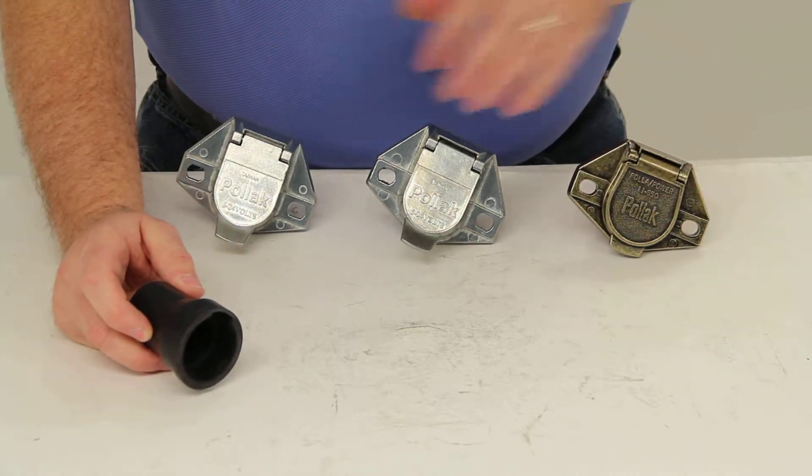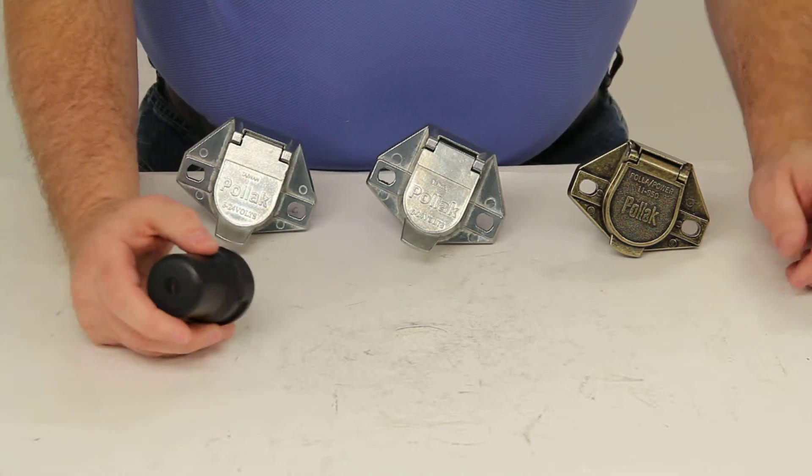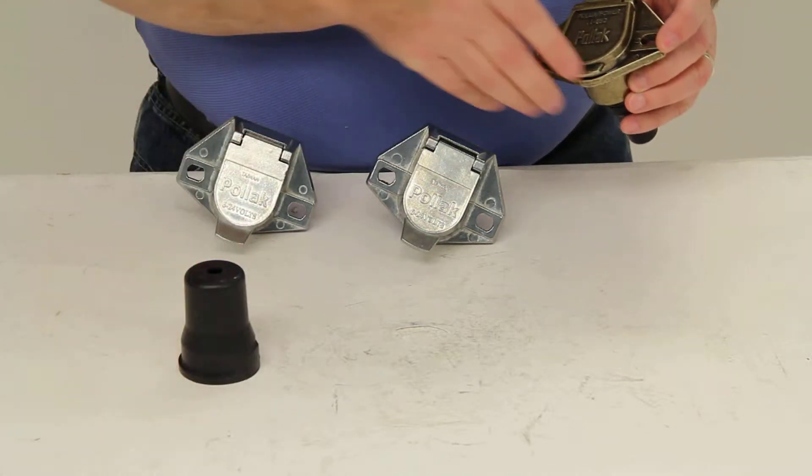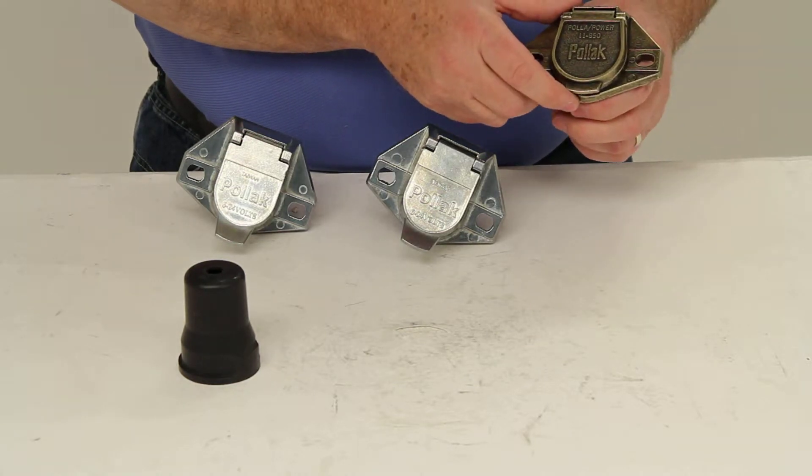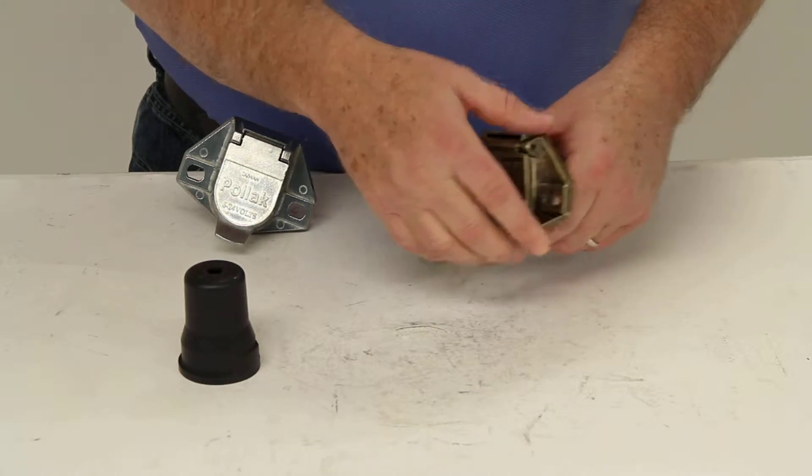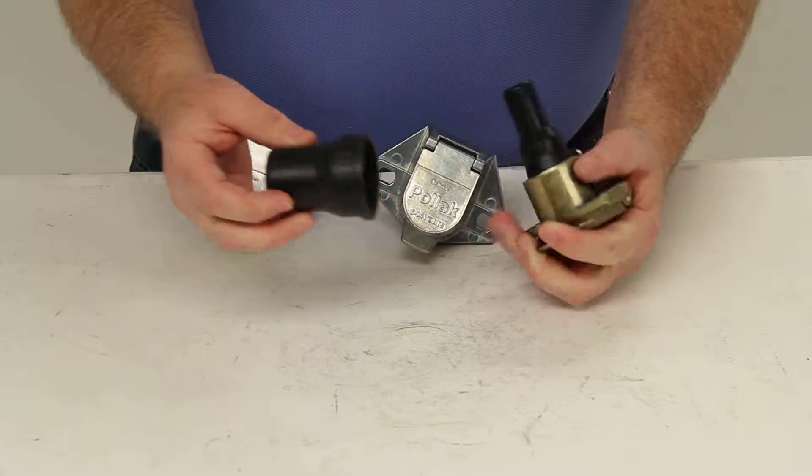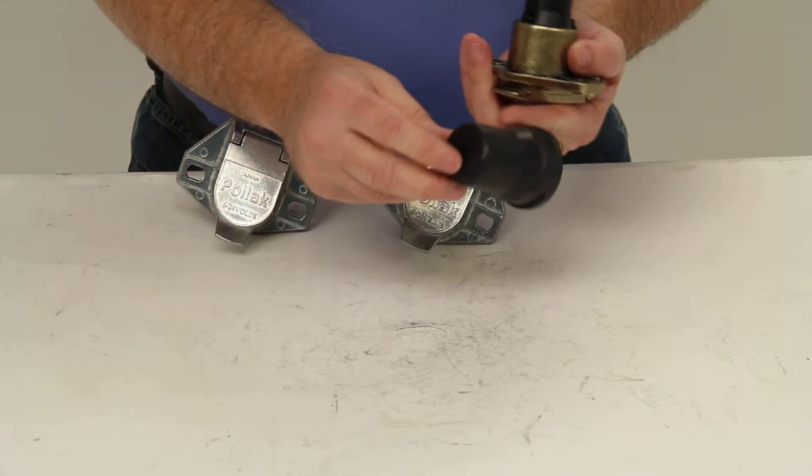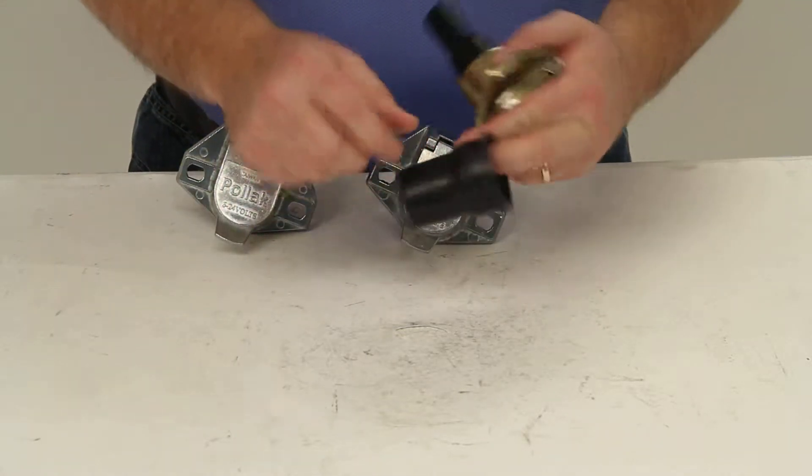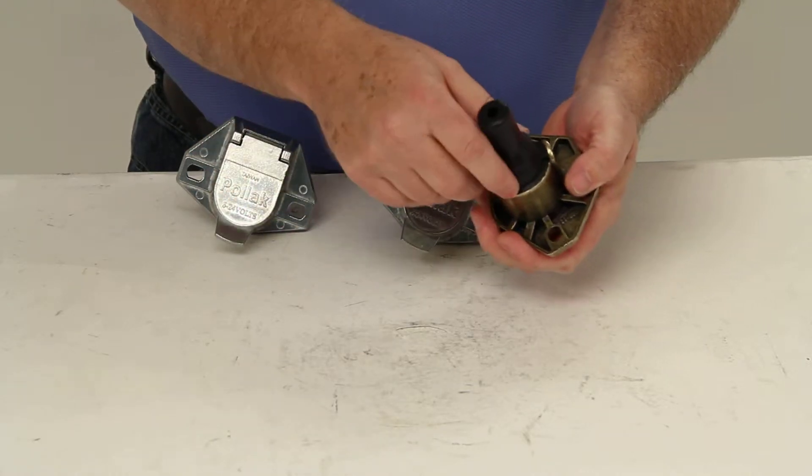I do have three of the connectors that this rubber boot is actually designed to fit on. The first one would be part number PK11851. This is a single pin socket. What this rubber boot is used for is you would run your wire through the hole right here in the rubber boot, pull your wire out here, and then you can run it into here and attach it to the connections.